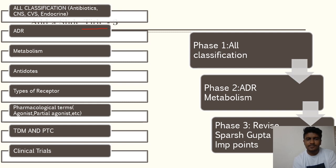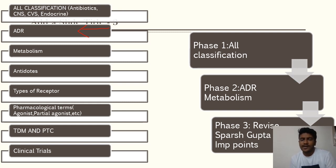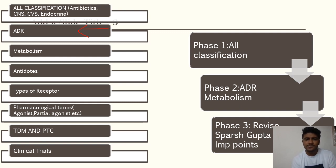The next very important topic is adverse drug reactions (ADRs). There is a list of ADRs caused by particular drugs — for example, aspirin causes Reye's syndrome, and chloramphenicol causes gray baby syndrome. You need to prepare a list of ADRs for all drugs; there are tentatively around 55 drugs whose ADRs are very important.